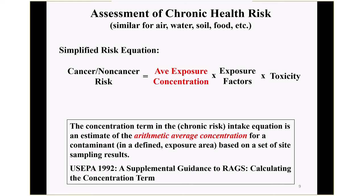Let's look at how chronic risk is assessed — it's a very simplified risk equation. Cancer or non-cancer risk — 10 in a million or one in a million risk, or non-cancer hazard quotients — equals your average exposure concentration in whatever media you're looking at, times a bunch of exposure factors (how many milligrams of soil is my child eating a day, how much air am I inhaling), times the toxicity factor. A 1992 U.S. EPA guidance quote: the concentration term in the chronic risk intake equation is an estimate of the arithmetic average concentration for a contaminant in a defined exposure area based on a set of sampling results. So we're looking at an average.